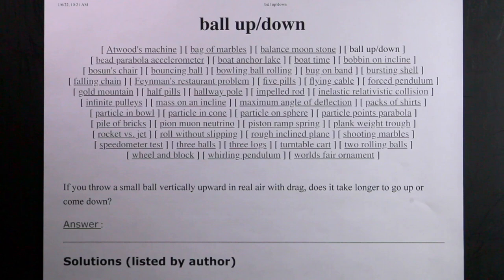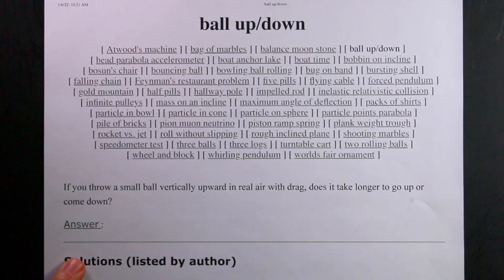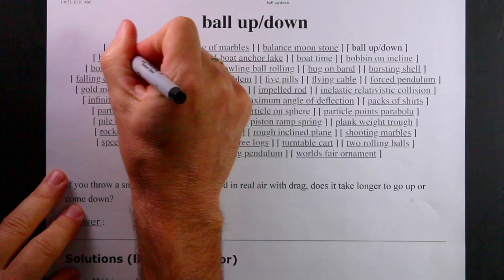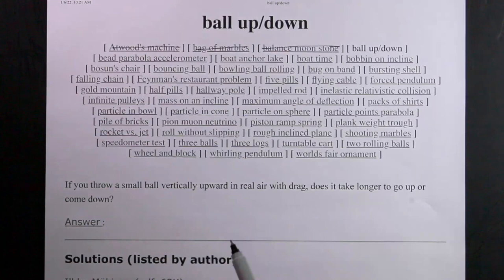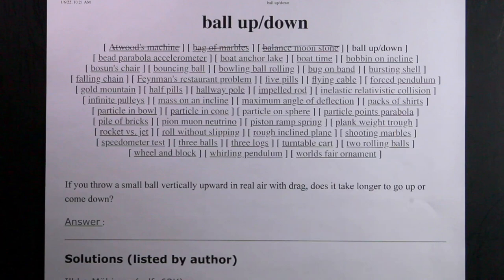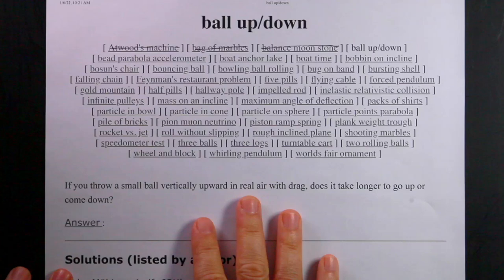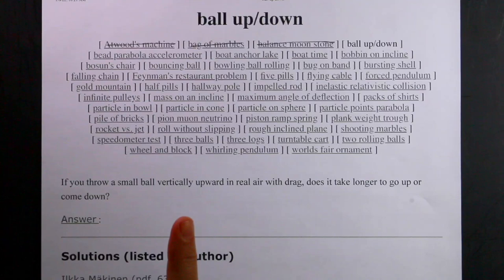I'm back with another problem. I'm working through the Feynman lecture exercises posted on Caltech's website — I'll link that down below. I've already done the Atwood machine, bag of marbles, balanced moonstone, and now we're on 'ball up down'. I'll link the playlist for all my solutions so far. Some of these questions are kind of difficult to read, so you have to practice interpreting and parsing them, but I think that's good practice.